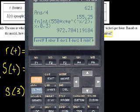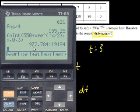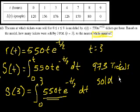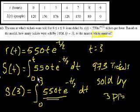972.78. And they want us to round to the nearest whole number. So the nearest whole number is 973. So we say 973 tickets sold by 3 p.m. And we're done. That only took us four minutes. And it would have taken us even less if we didn't have to explain it. Anyway, I will see you in problem number three.